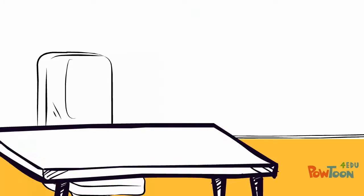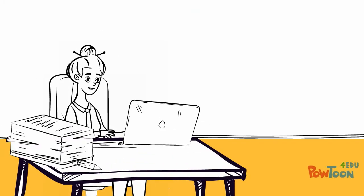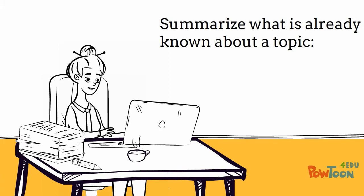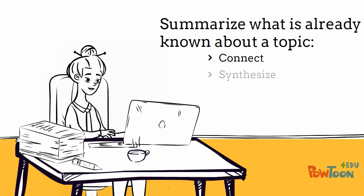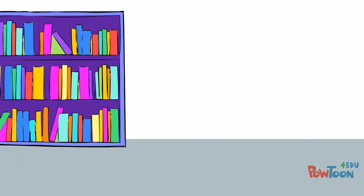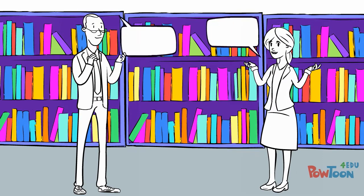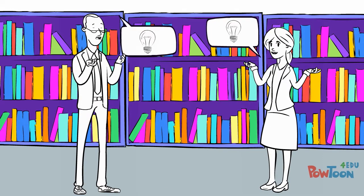You have probably been asked to conduct research in most of your classes. A literature review builds off those skills. The purpose of a literature review is to summarize what is already known about a given topic. You will select relevant past research, then connect, synthesize, and evaluate these texts or studies. Think of it as a conversation between the authors — the connections between the ideas are as important as the ideas themselves.